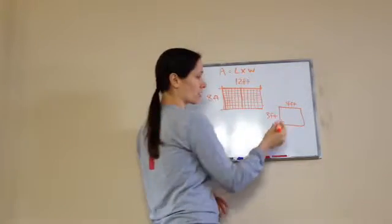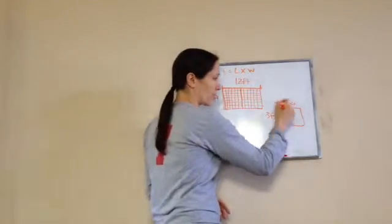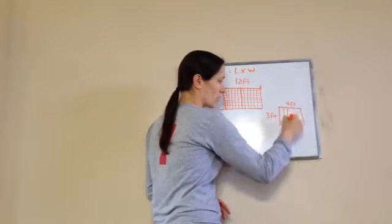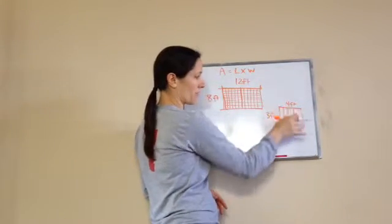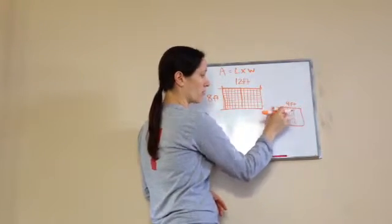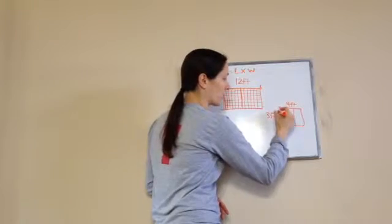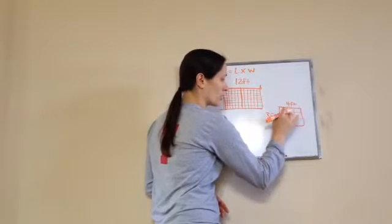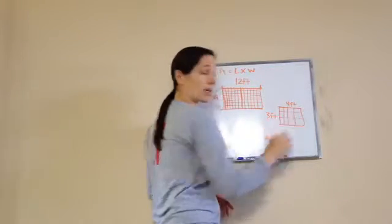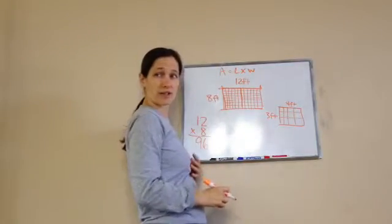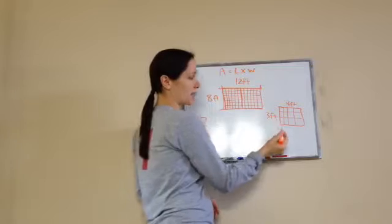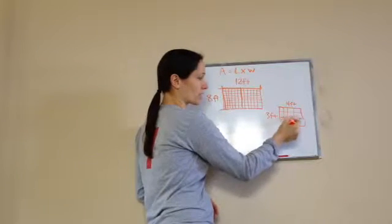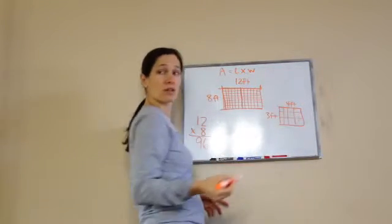So watch me do this. I'm going to have 4 — one, two, three, four — and three — one, two, three. Do you see how I did that? And how many do I have? One, two, three, four, five, six, seven, eight, nine, ten, eleven, twelve. Got it? Yeah.